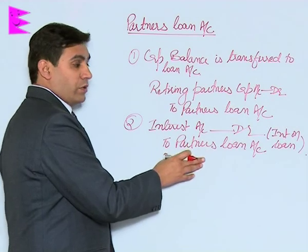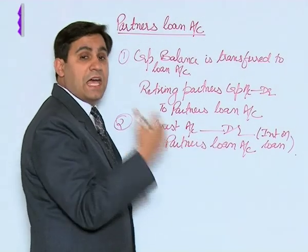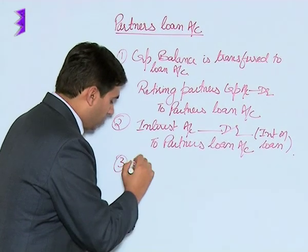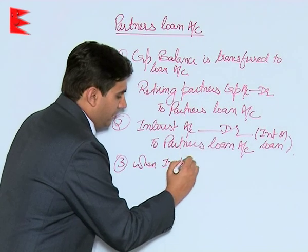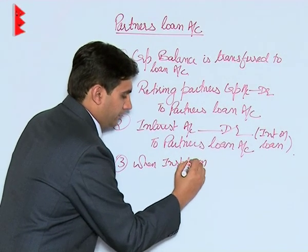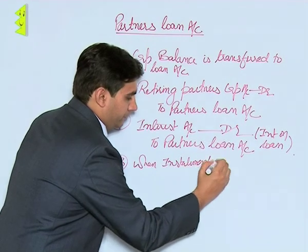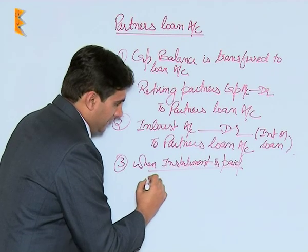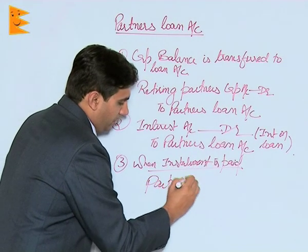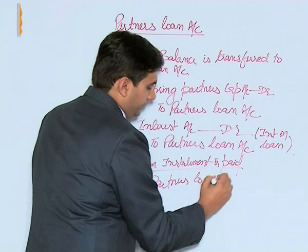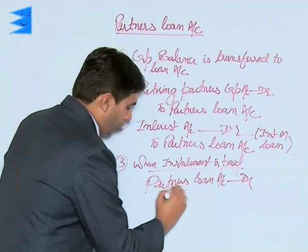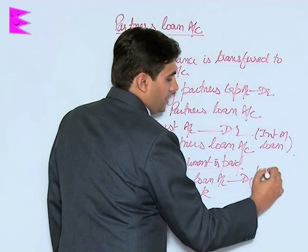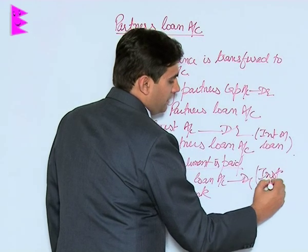Now students, the payment for this particular interest as well as the installment of loan has to be made. So when the installment is paid, the entry is: partner's loan account debited to cash or to bank. That is, installment plus interest.